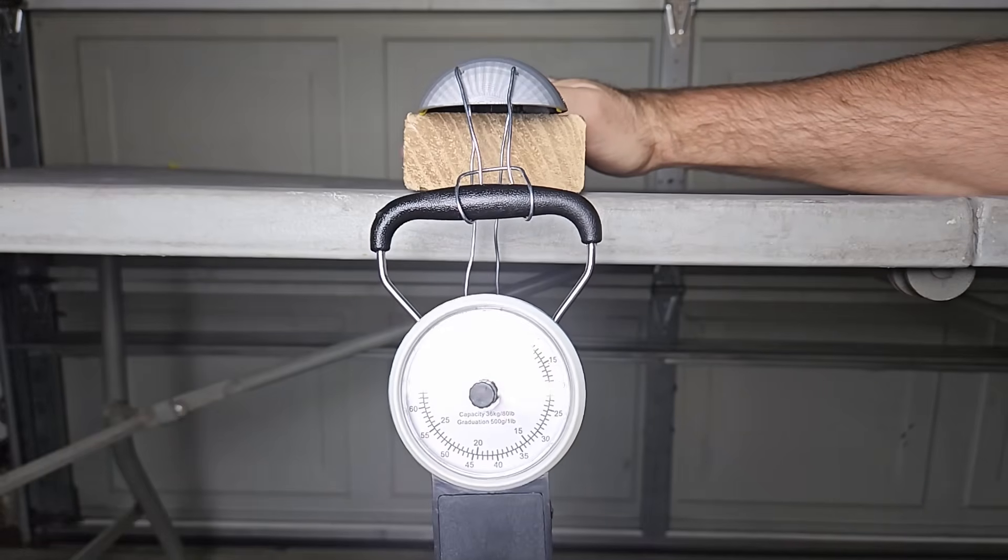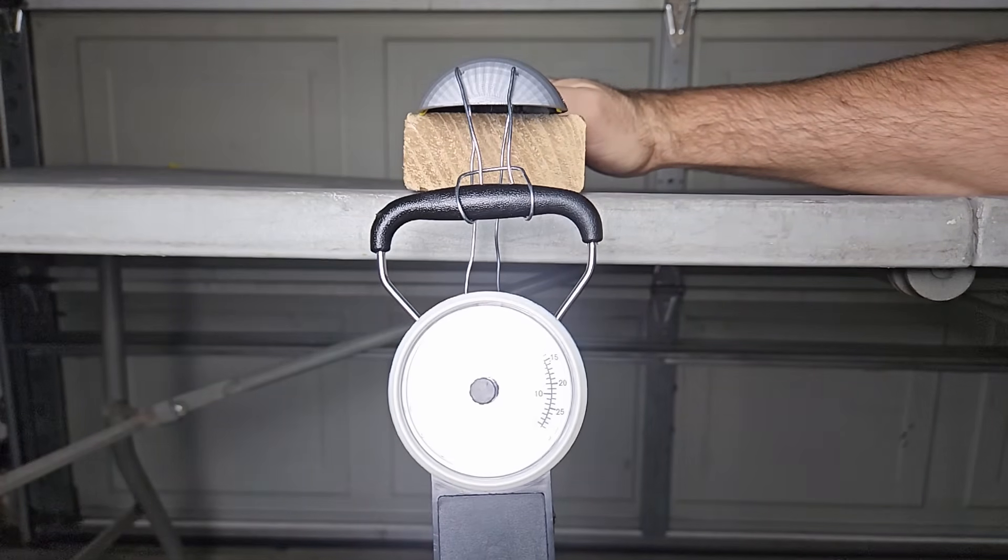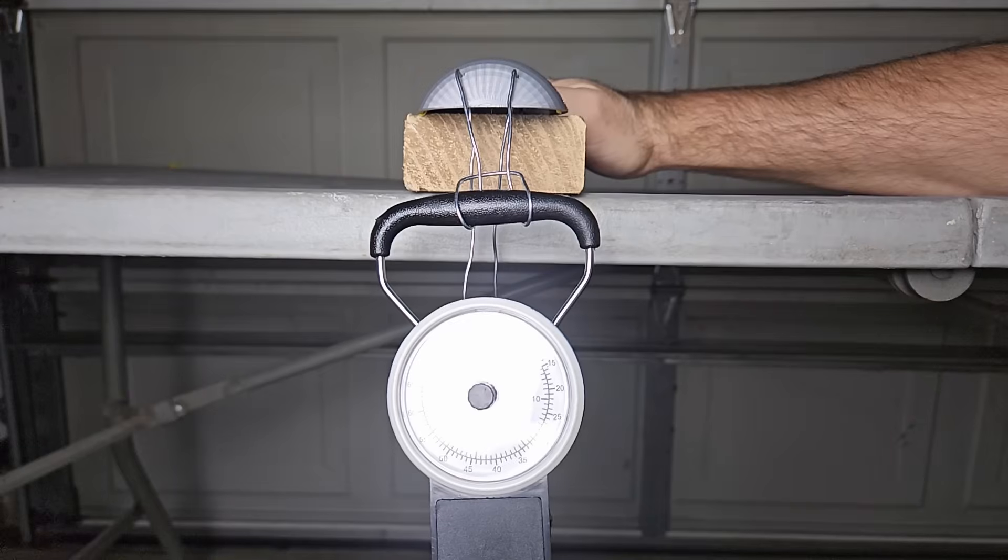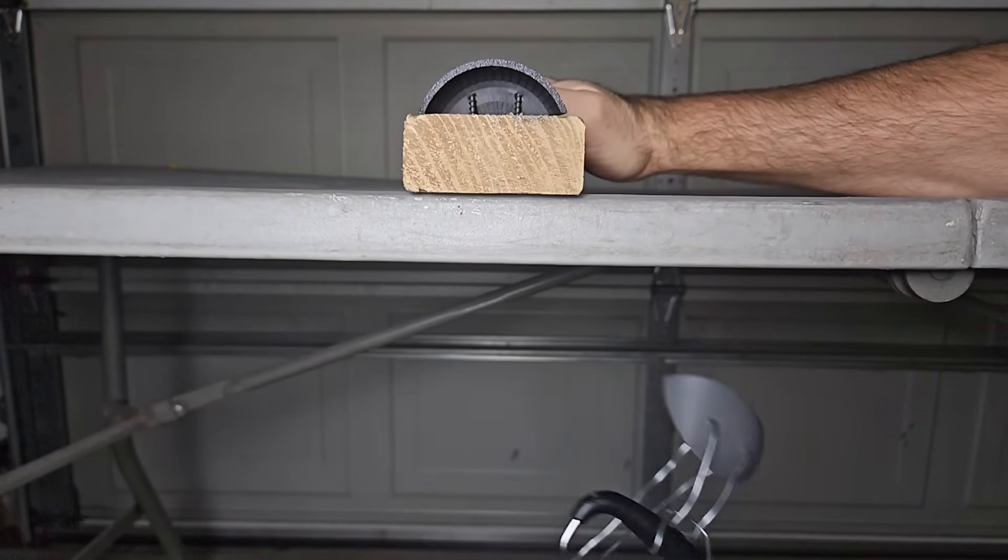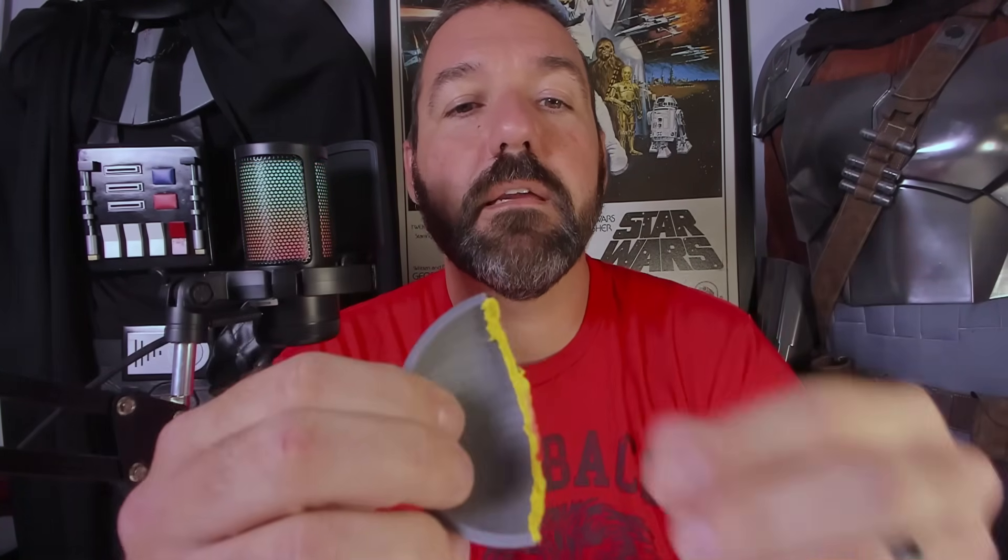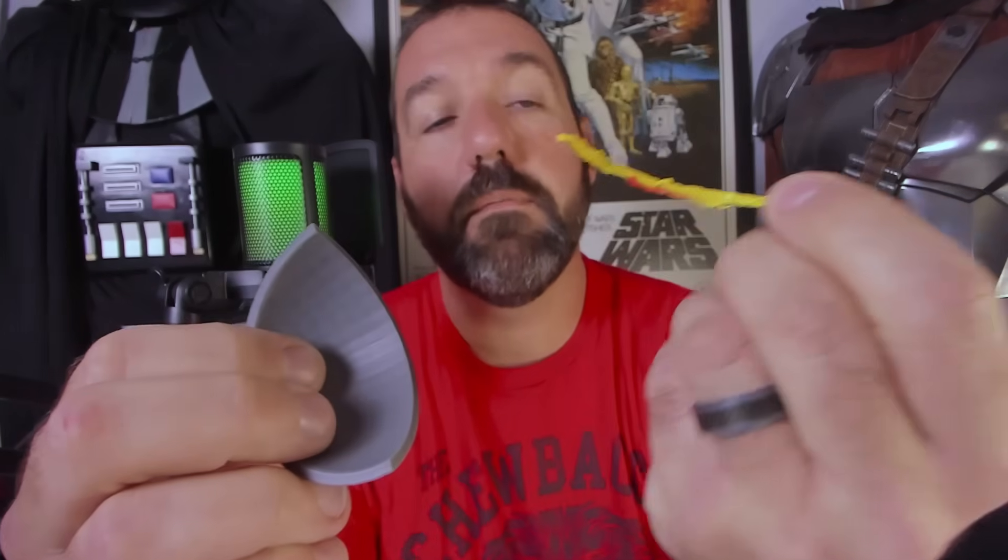And the last one is the 3D pen. The reflection blocked the dial so you'll just have to take my word that it broke at 0 maybe 1 pound. So I give this one a 1 out of 10. It doesn't really bond to the plastic. It comes right off.